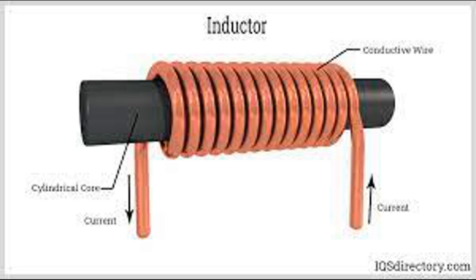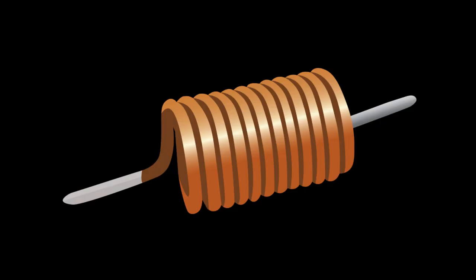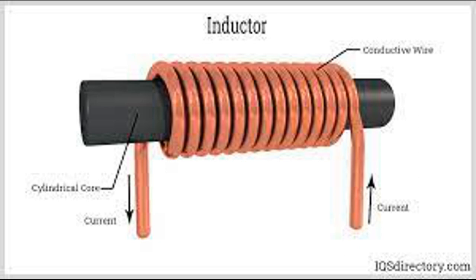The design and construction of a coil depend on the specific requirements of the application, such as desired inductance, current handling capability, frequency range, and other factors. The selection of the coil type depends on the specific application requirements, including the desired inductance, current handling capacity, frequency range, and other factors.